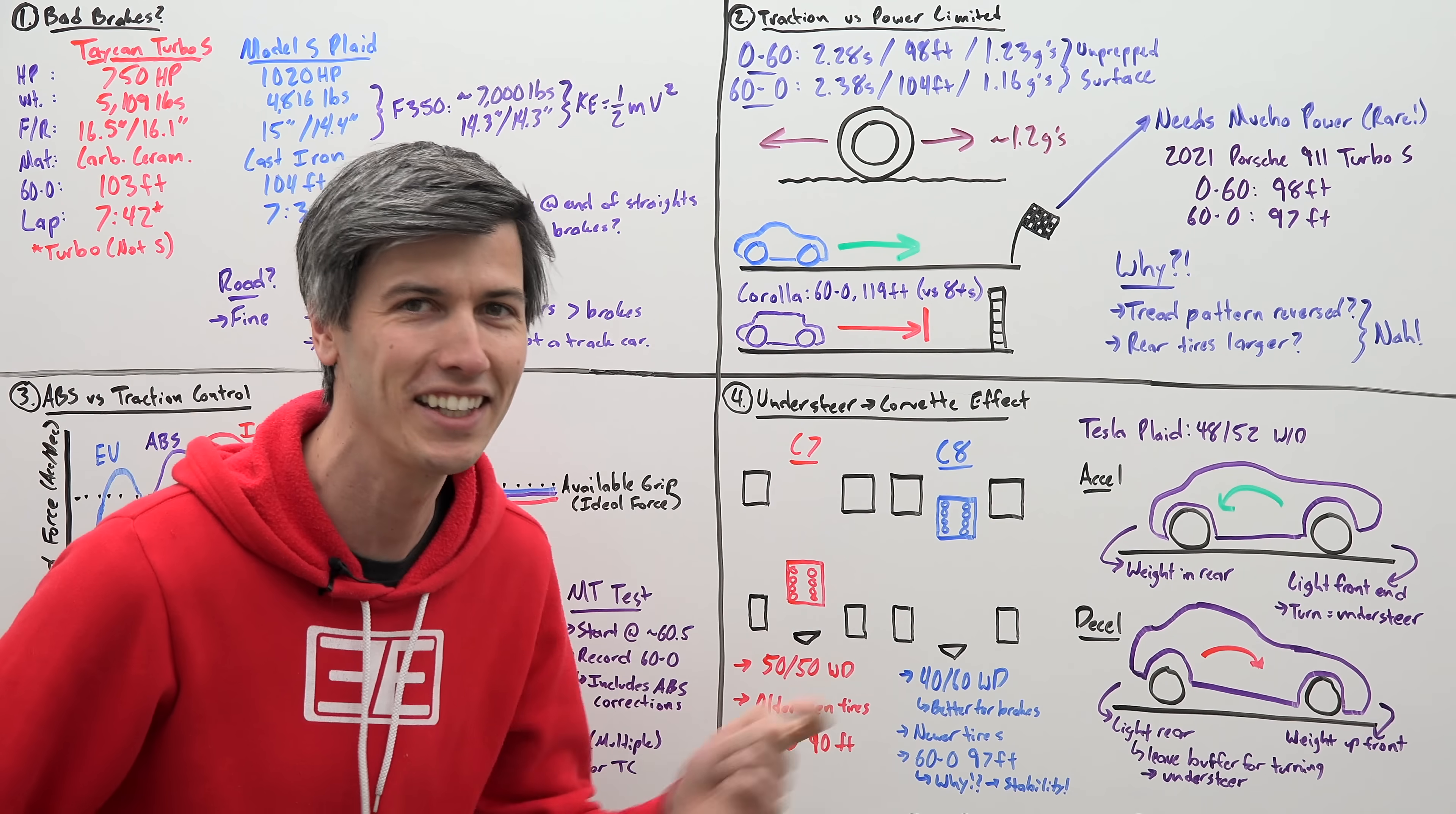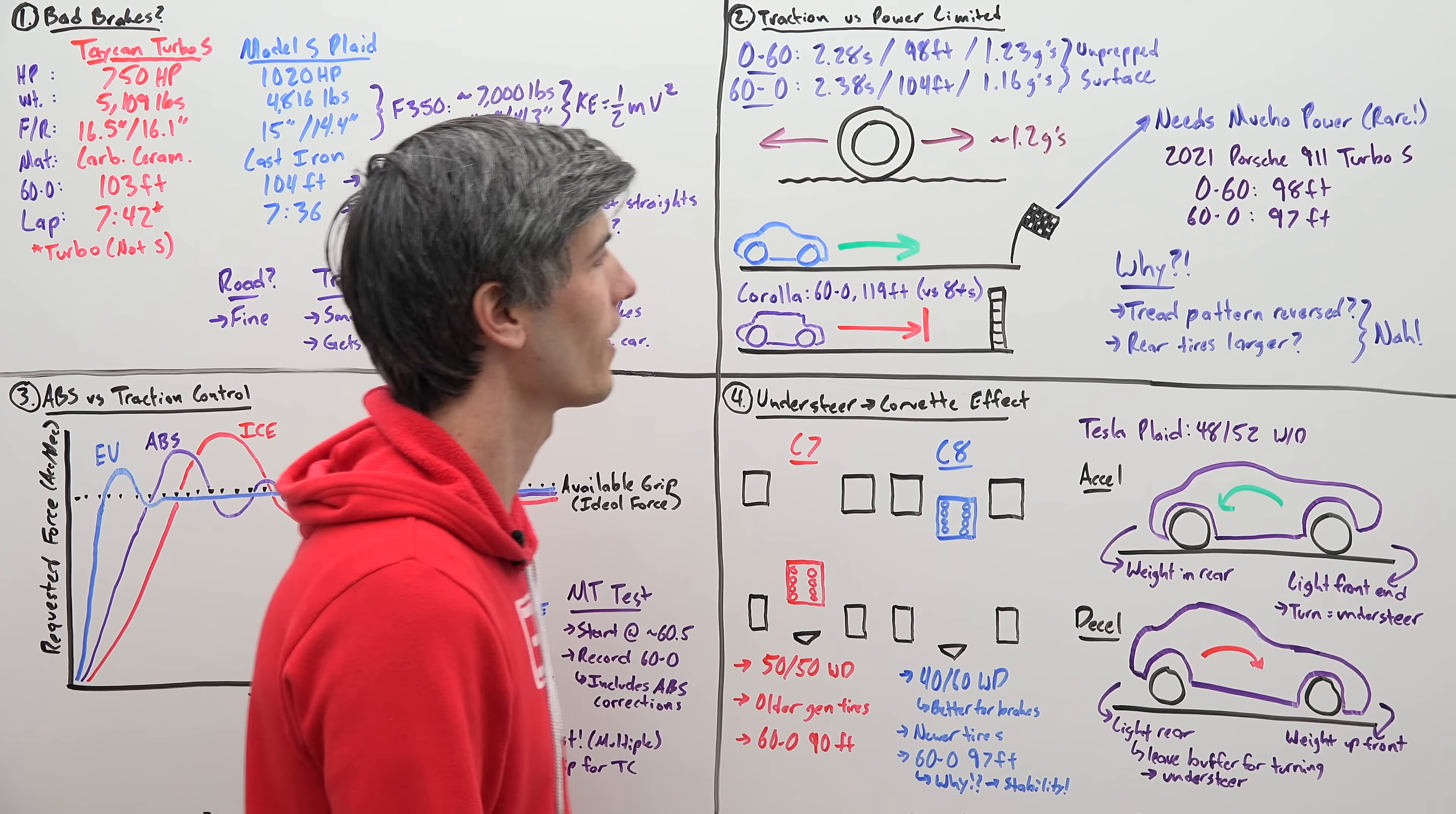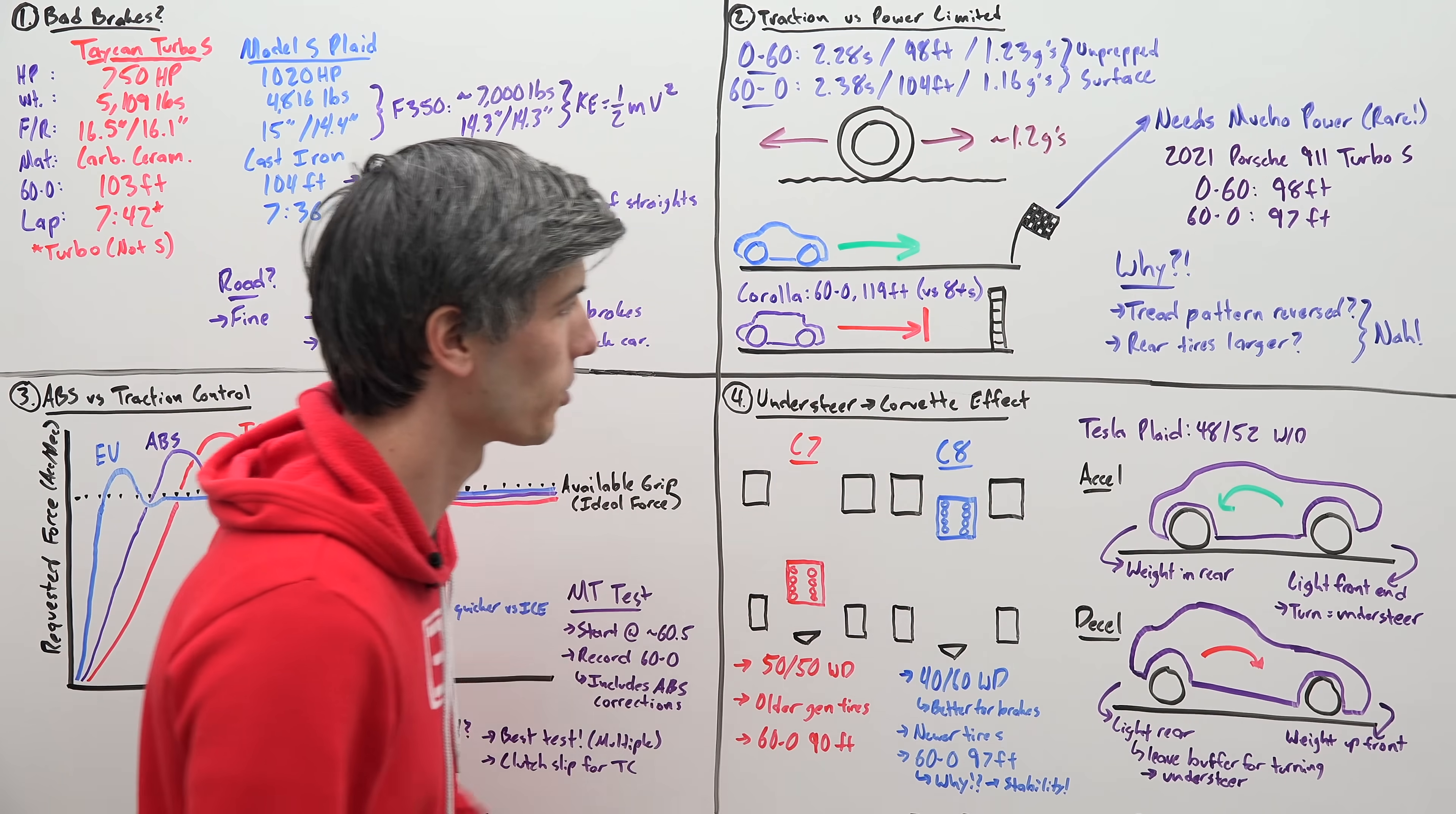The closest I have seen to something having these numbers reversed like the Tesla does is the Porsche 911 Turbo S doing 0 to 60 in 98 feet, same distance as the Tesla here except a little bit slower, about 0.2 seconds slower, and 60 to 0 in 97 feet. So it is able to brake just slightly better than it accelerates. One foot.